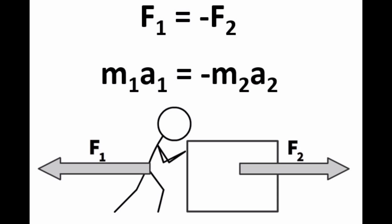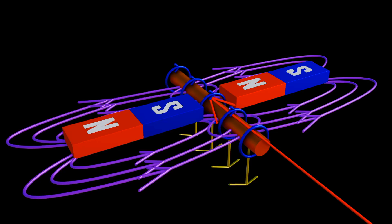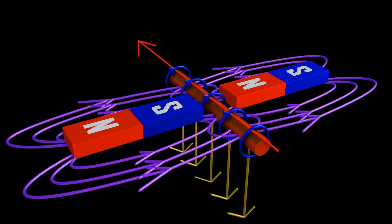Isaac Newton describes three laws of motion. Newton's third law of motion states that for every action there is an equal and opposite reaction. In our previous video we talked about Lorentz force law.